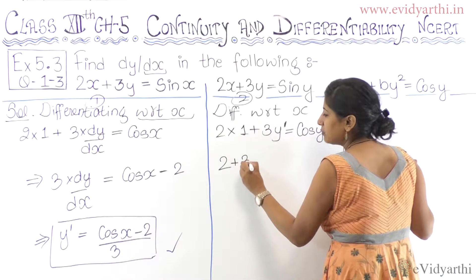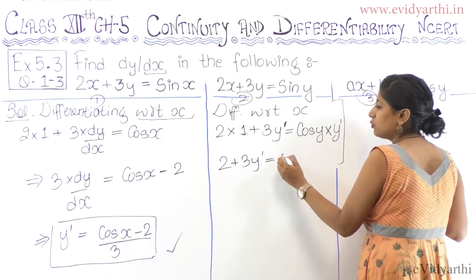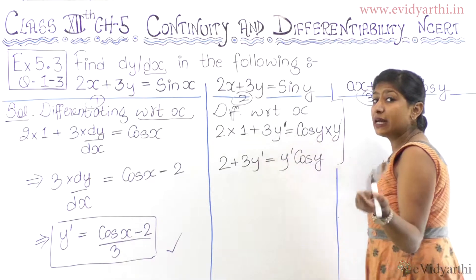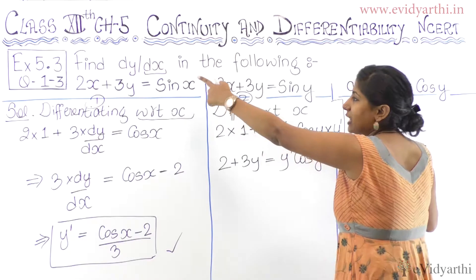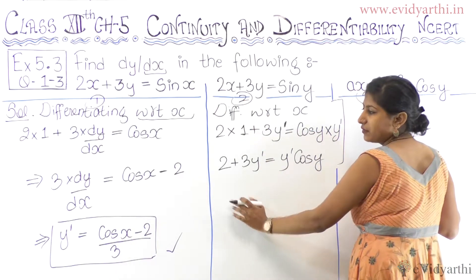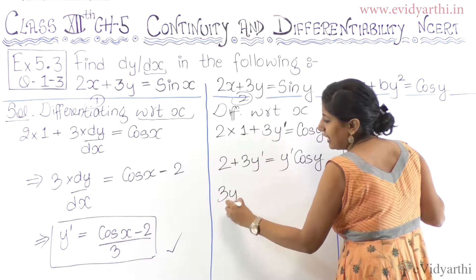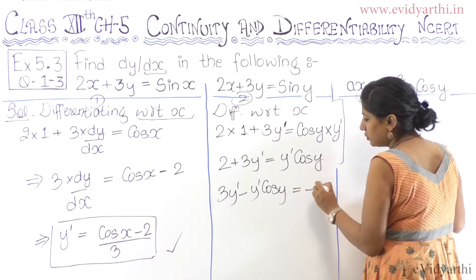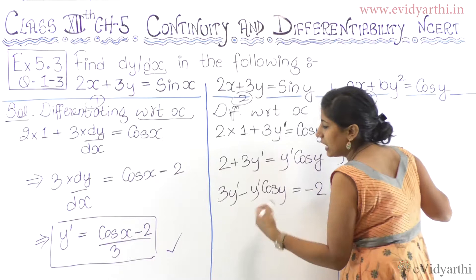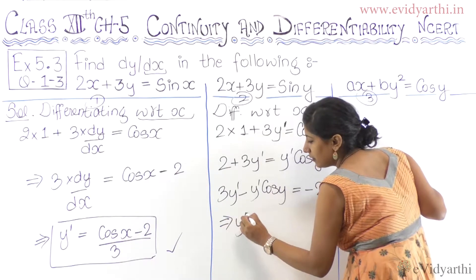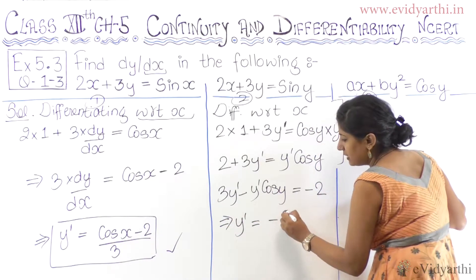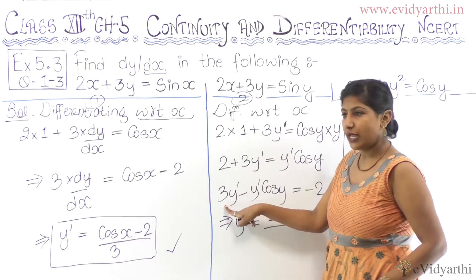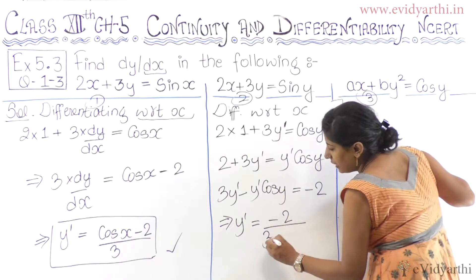2 plus 3 times y' is equal to y' into cos y. Same thing I have written again. Now I will find it. Y' is what we need. You should do it now. 3 times y' minus y' cos y equals minus 2. So y' equals minus 2 upon 3 minus cos y.